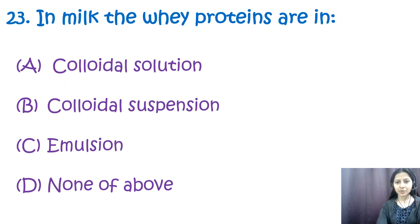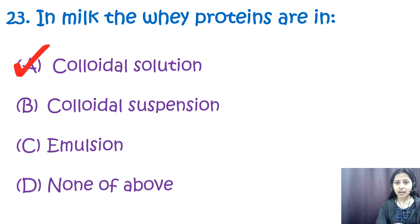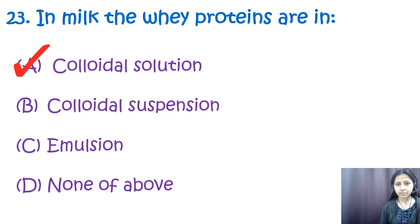Question number twenty-three: in milk, whey proteins are in — a) colloidal solution, b) colloidal suspension, c) emulsion, d) none. The correct option is a, colloidal solution. A colloidal solution is a mixture where particles of one substance are evenly dispersed throughout another but not dissolved. Colloidal suspension would imply the proteins are suspended but not dissolved; an emulsion refers to a mixture of two or more normally immiscible liquids.